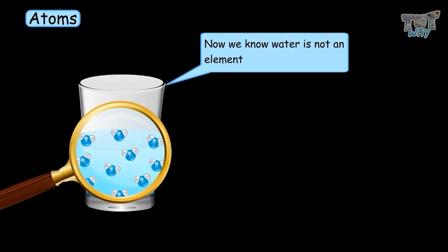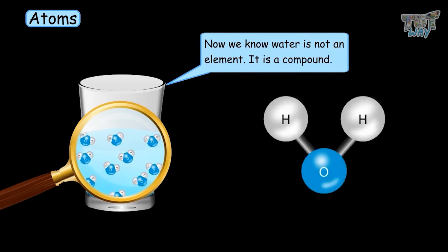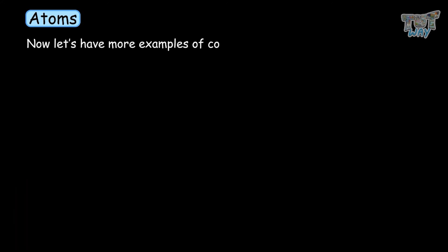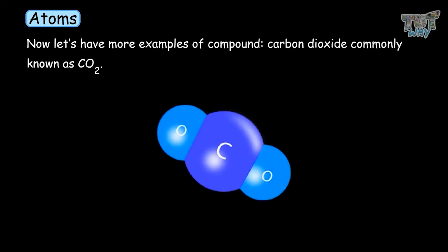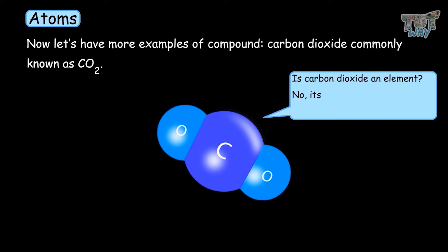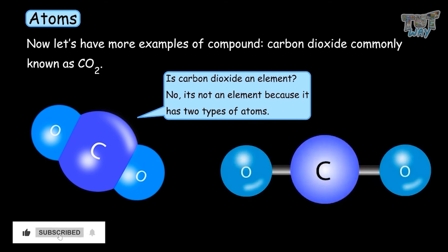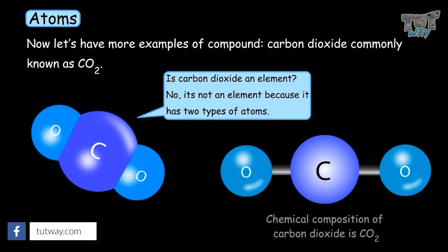So now we know water is not an element — then what is it? It is a compound, meaning it exists of atoms of different elements in a fixed ratio. So we can say water is a compound of hydrogen and oxygen. Another example of a compound is carbon dioxide, commonly known as CO2. Carbon dioxide is not an element because it has two types of atoms: atoms of carbon and oxygen. So carbon dioxide is a compound made up of one atom of carbon and two atoms of oxygen — all molecules of carbon dioxide have the chemical composition CO2.